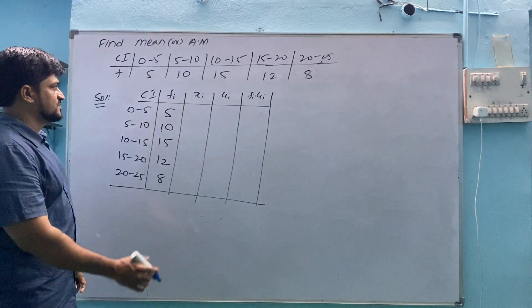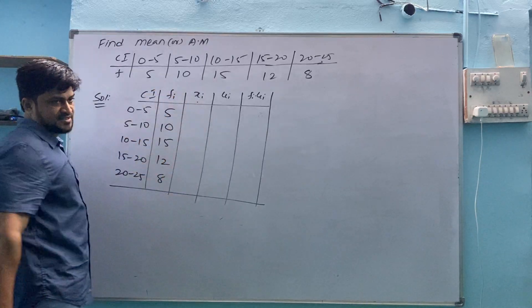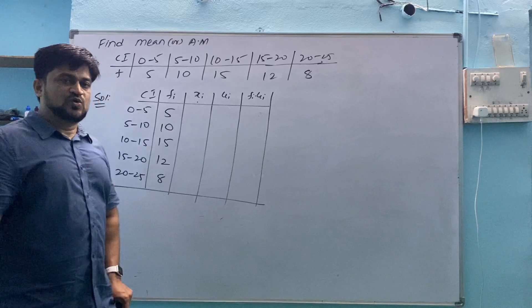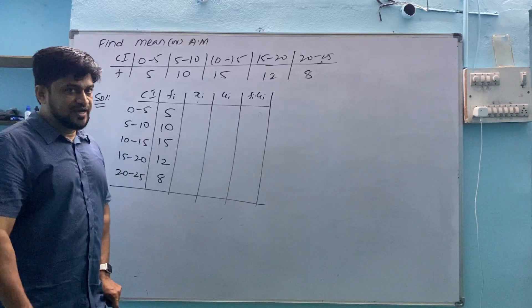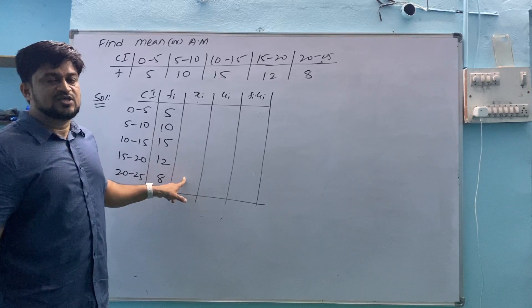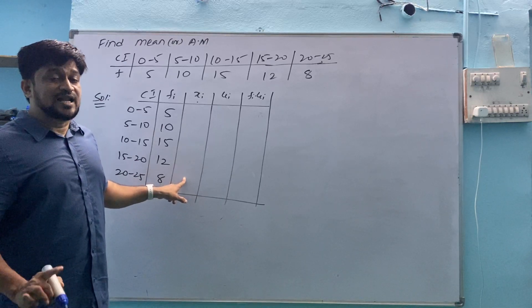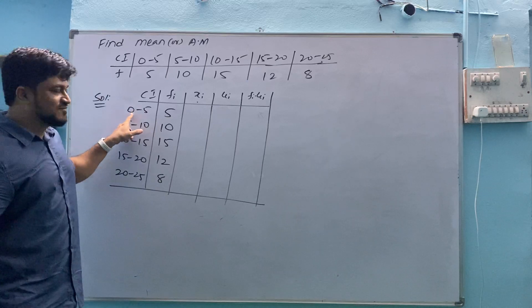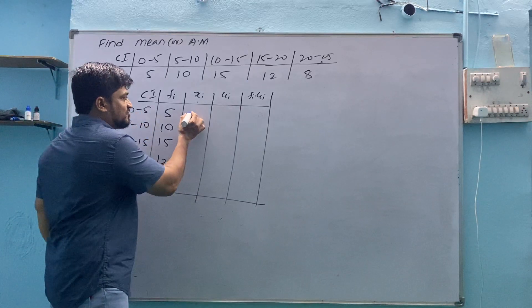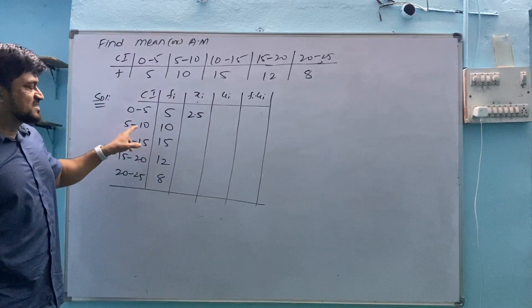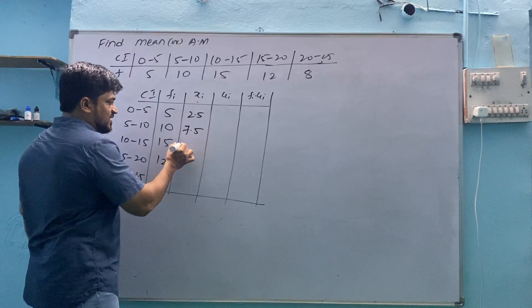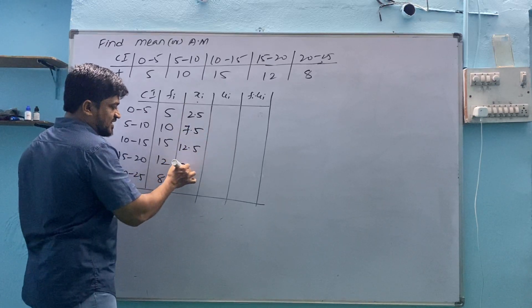To find Xi, if you follow the previous video you can have the idea. To find Xi, you have to use the class interval two values. Class interval 0 and 5: 0 plus 5 is 5 divided by 2 equals 2.5.